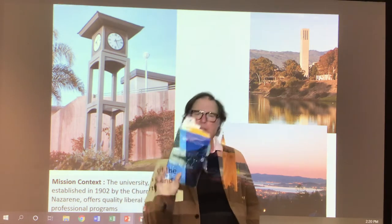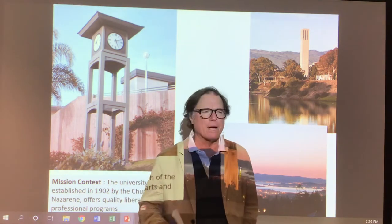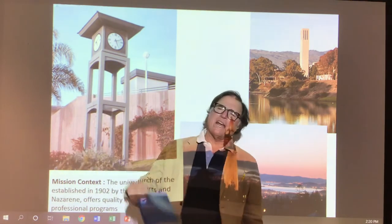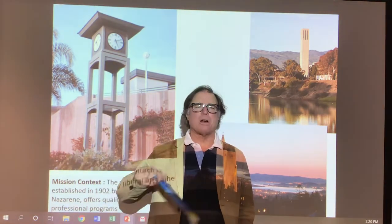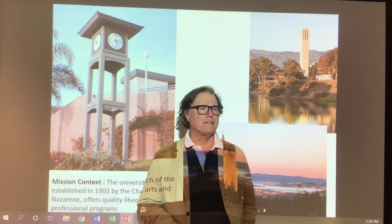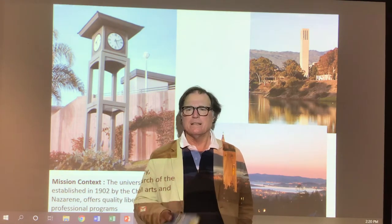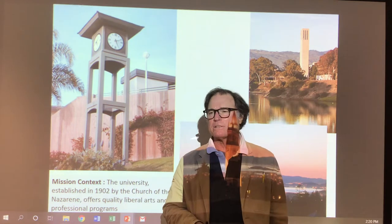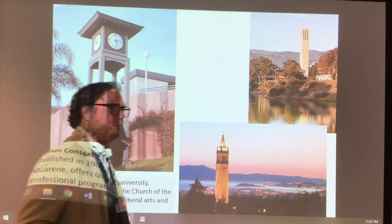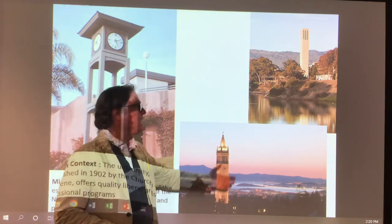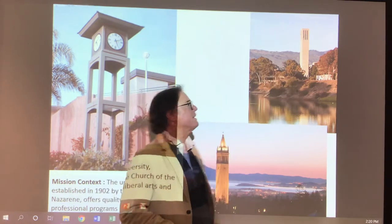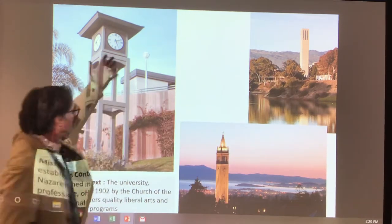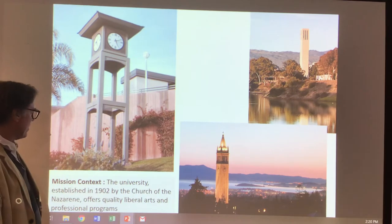What I had you read was this book by me, which is a broader appreciation of universities and a broader understanding of how the idea of a university is distinct in the Western tradition. In Western tradition, we have these towers — this is Sather Tower at Berkeley, that's UC Santa Barbara's Storke Tower, and this is the tower at ours.